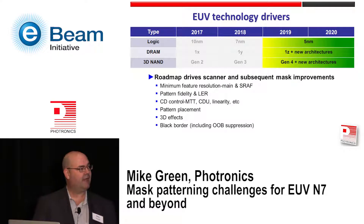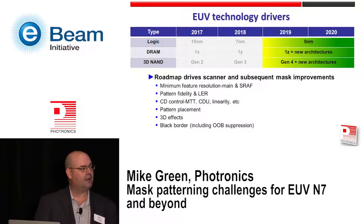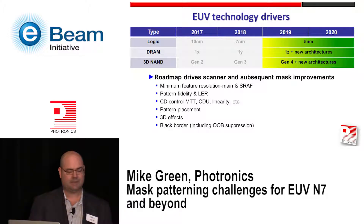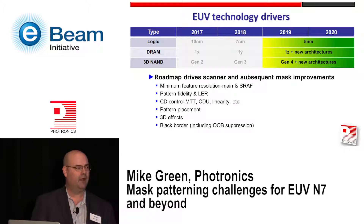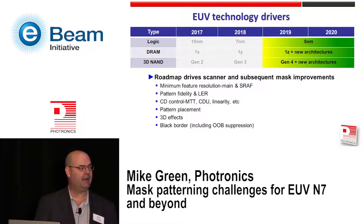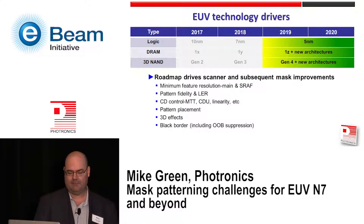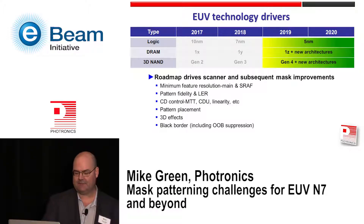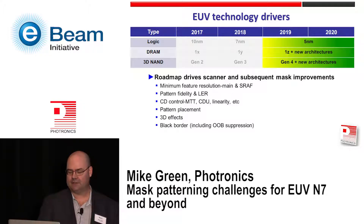The tech drivers: over the next couple of years we're going to be moving into 5 nanometer — we're in 7 nanometer production starting this year — 5 nanometer will come in the next couple of years, and then the complementary memory nodes along with that. That's going to drive many needs for mask improvements in terms of minimum feature resolution, main features and SRAFs, pattern fidelity specifically LER, CD control, pattern placement, mask 3D effects, and out-of-band wavelength suppression challenges.